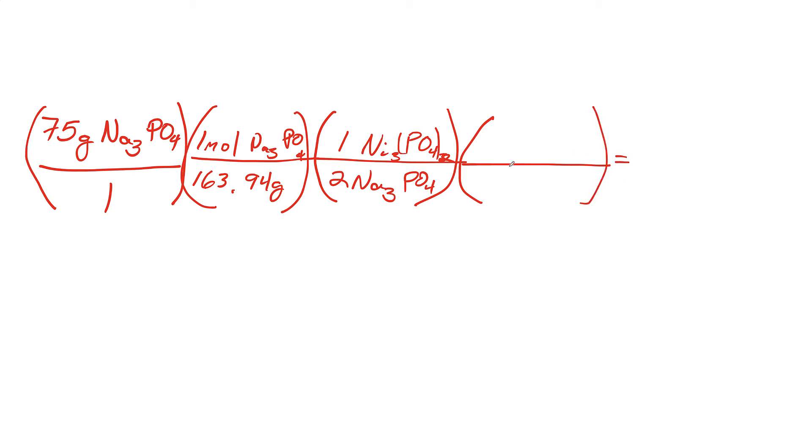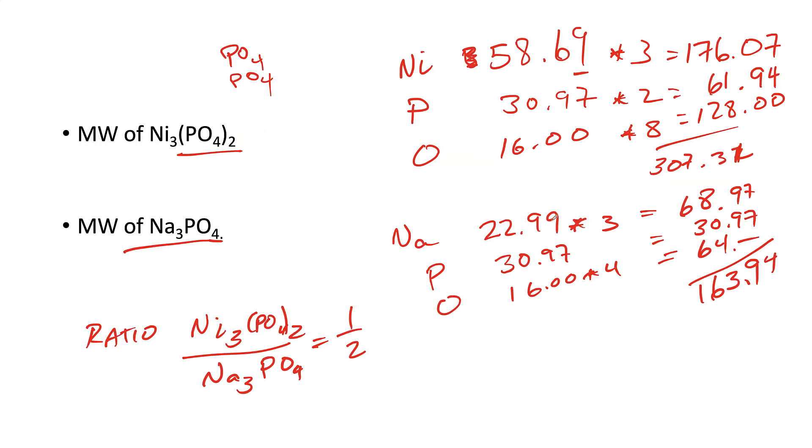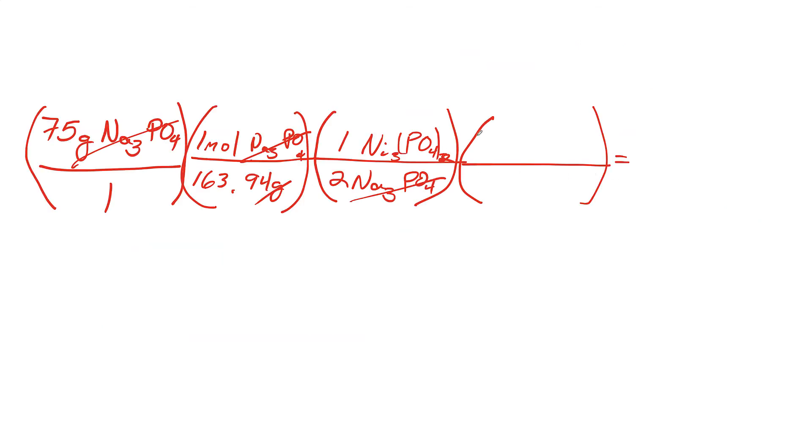And last, I want to convert my mole. Now what I have if I cross everything out - grams of that, got moles, that cancels, and I have moles of nickel phosphate. Now I need the mass of nickel phosphate, the 307.31. Let me rewrite this down here. One mole of nickel phosphate - Ni₃(PO₄)₂, excuse me - and this is the mass of that. And now I'm ready to calculate.